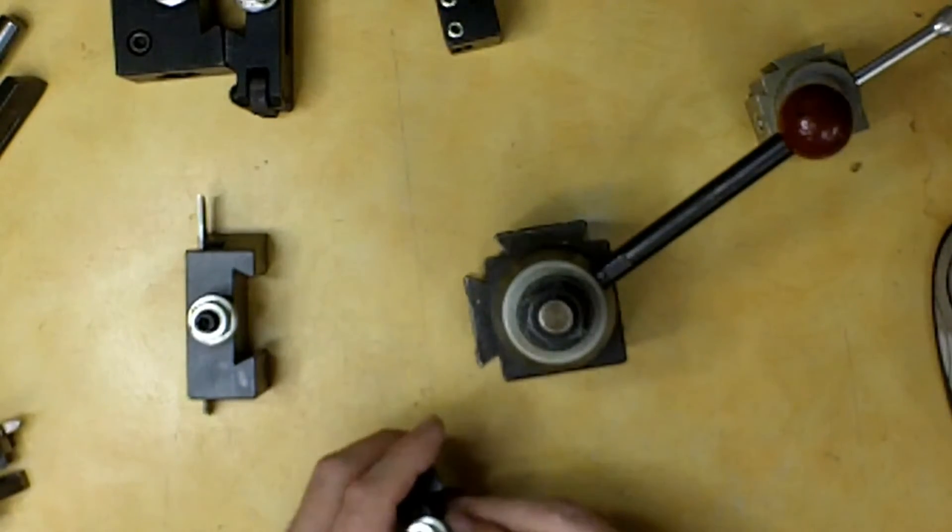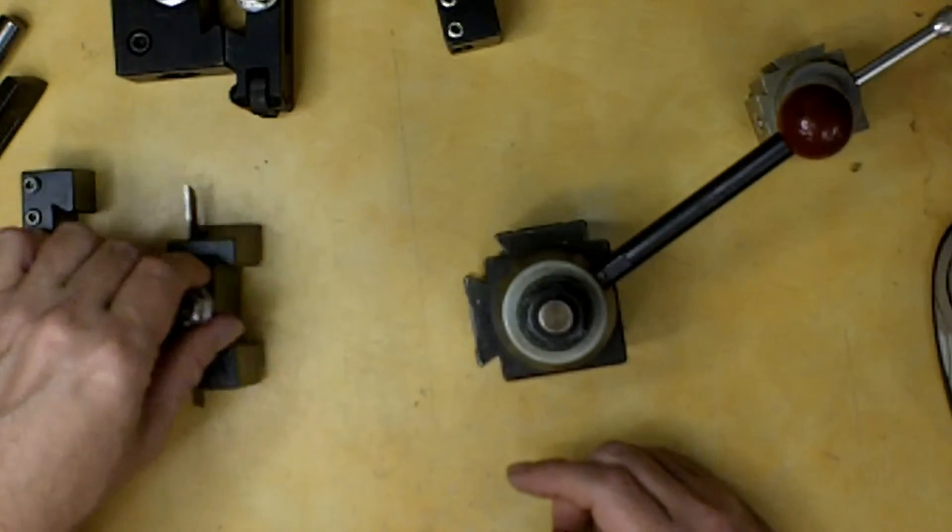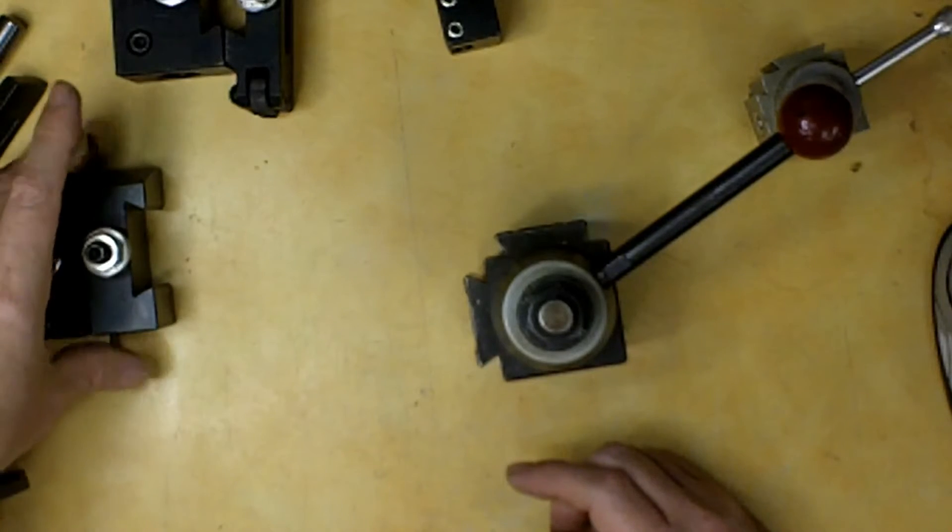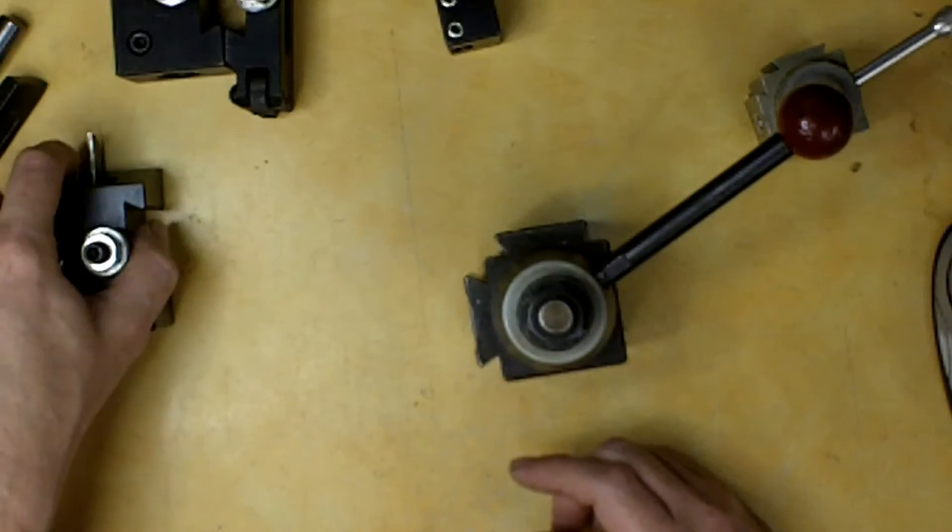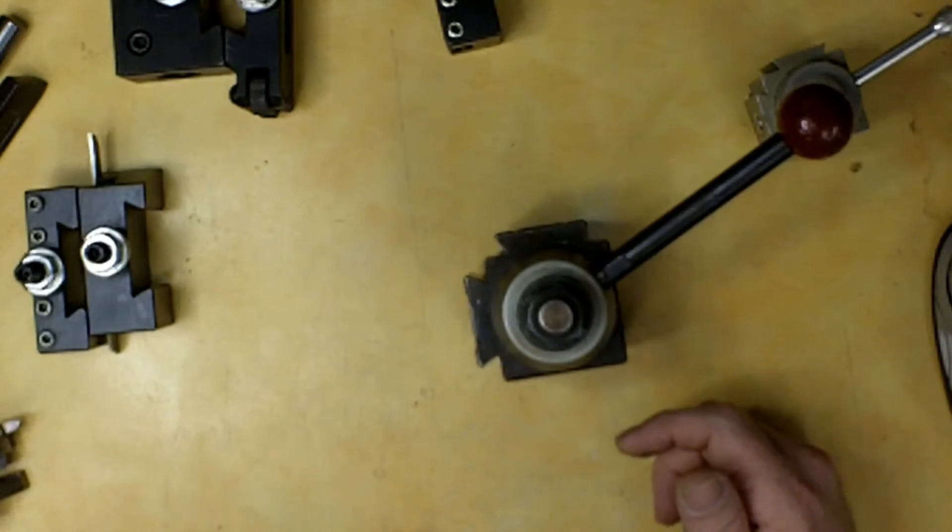You cannot do that with a turret style tool post. You need to use shims to shim it up. Or, if it's too tall, you need to grind the bit down. And I've never used one of those. I don't have one, so I can't show it in this example.